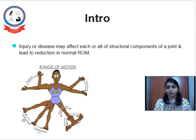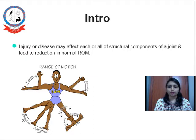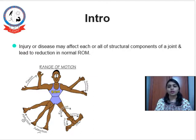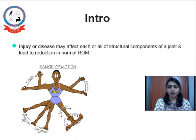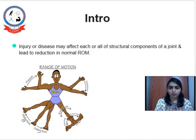Range of motion — what is range of motion? Range of motion is the arc of movement occurring at the joint. And if this joint or any structure or component of the joint is damaged by injury or disease, there may be a reduction in this normal range of motion. There are several factors which are responsible for reducing the range of motion.